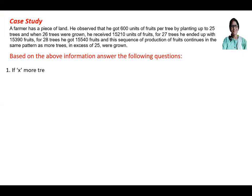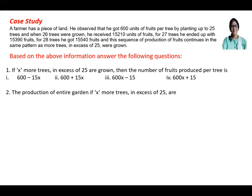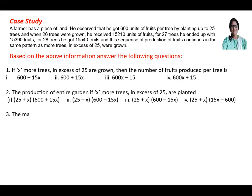Question one: if x is the number of more trees in excess of 25 grown, then the number of fruits produced per tree is: (a) 600 minus 15x, (b) 600 plus 15x, (c) 600x minus 15, (d) 600x plus 15. Question two: the production of the entire garden if x more trees in excess of 25 are planted is: (a) (25+x)(600+15x), (b) (25−x)(600−15x), (c) (25+x)(600−15x), (d) (25+x)(15x−600).